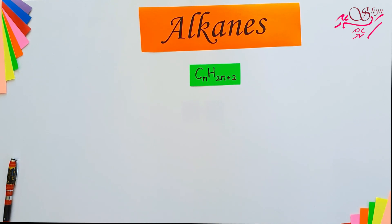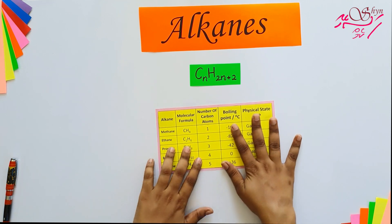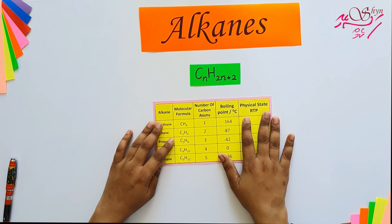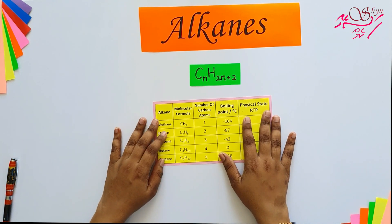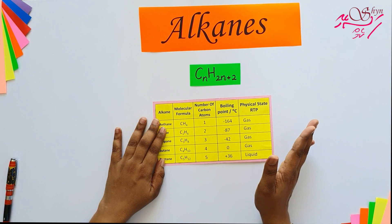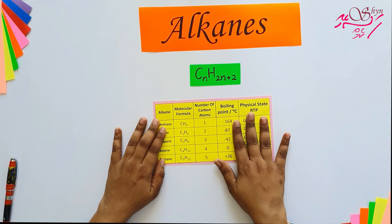All the homologous series of compounds have similar chemical properties. The details of chemical properties will be covered later. Now let's look at the physical properties.